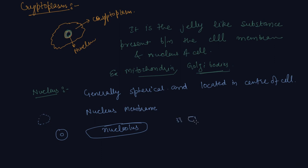Chromosomes carry genes and help in the inheritance and transfer of characters from parents to offspring. That is why a child somewhat looks like his parents — this is because of chromosomes. These chromosomes can be seen by microscope when the cell divides.